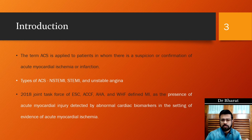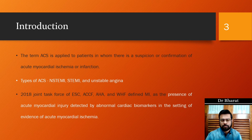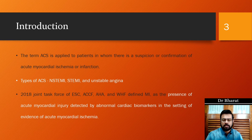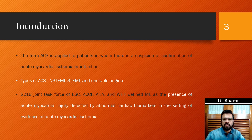ACS is applied to patients in whom there is a suspicion or confirmation of ongoing myocardial ischemia that can or may not lead to infarction. So for Acute Coronary Syndrome, the patient need not have infarction — there need only be evidence of ischemia. ACS is divided into two major classifications: unstable angina, where there is no infarction, and MI (myocardial infarction). Myocardial infarction is then divided into ST Elevation MI and Non-ST Elevation MI, diagnosed using ECG changes caused by ischemia.